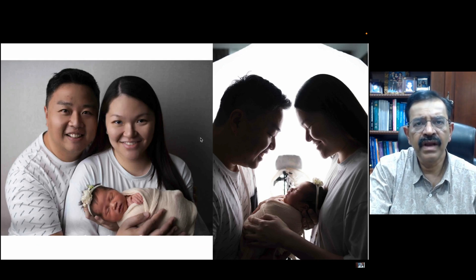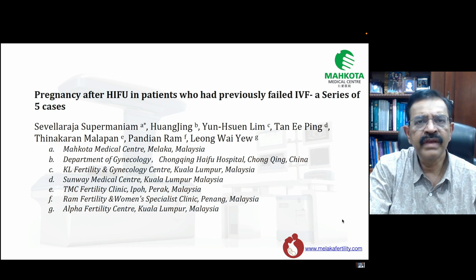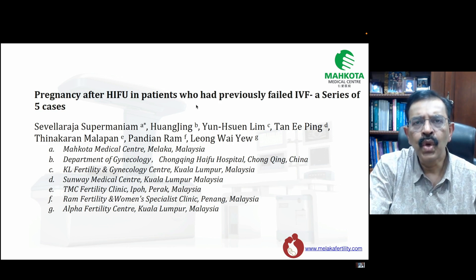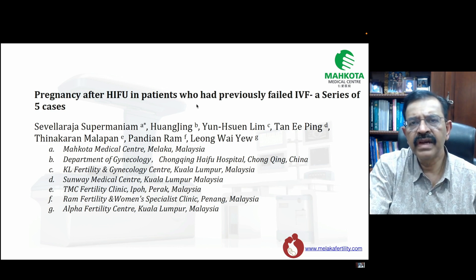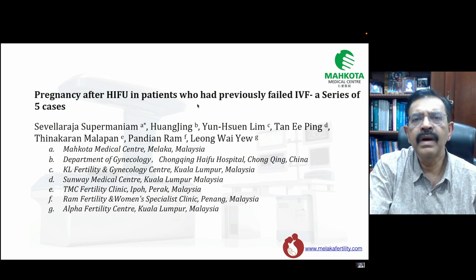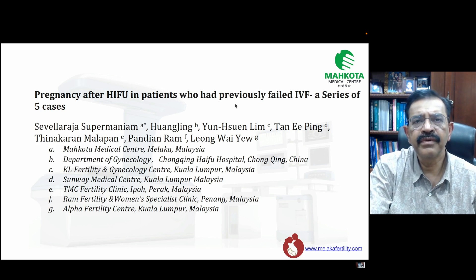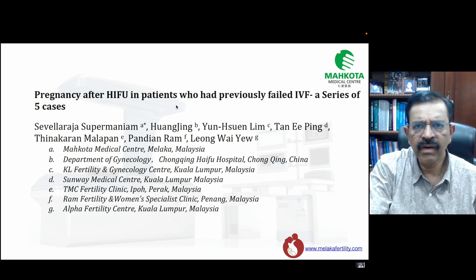The patient conceived and delivered a baby in February this year by caesarean section. This is a photo of the patient with her baby — she allowed me to use these photographs. So far, we have five patients in this category — all had failed IVF with frozen embryos, were referred to me for HIFU, then sent back to their respective IVF specialists for frozen embryo transfer, and all five conceived. Four have already delivered and one pregnancy is still ongoing.